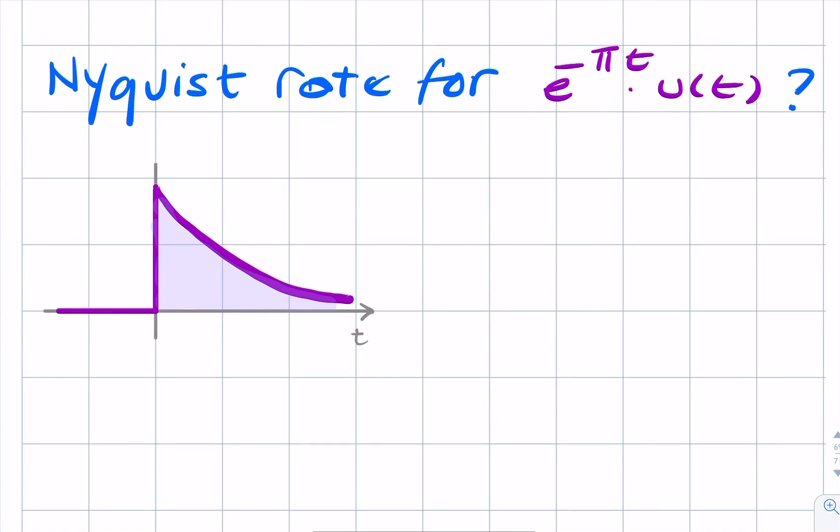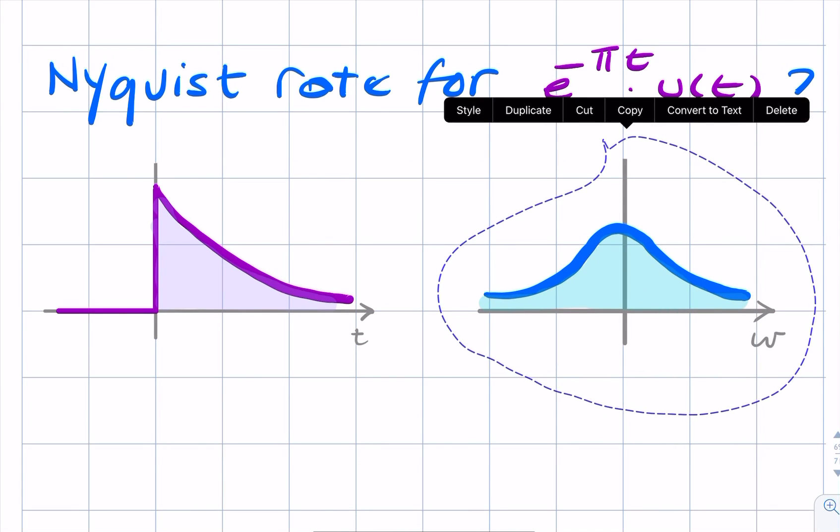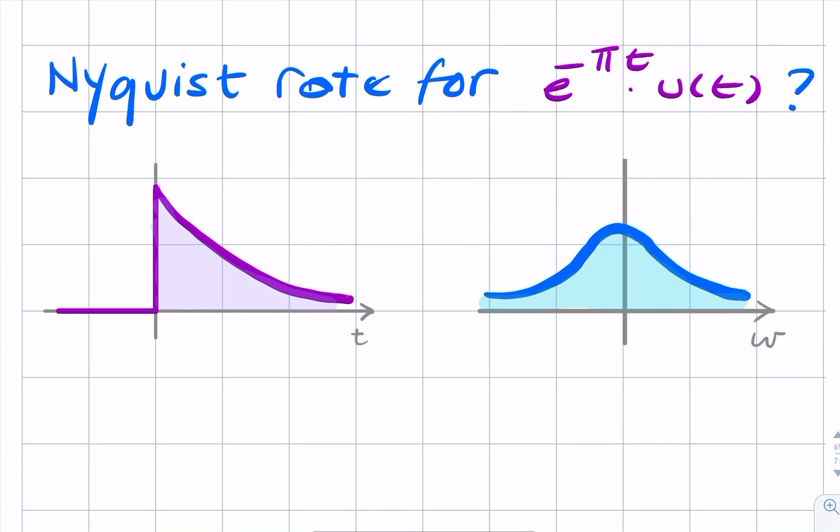So, in trying to find the Nyquist rate, we usually try to start thinking in the frequency domain. Because what we're after is the bandwidth. So the Nyquist rate will be twice the bandwidth. But this signal, as you can see, is not band-limited.